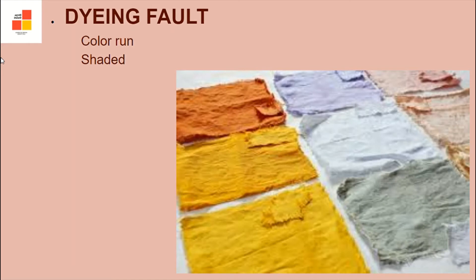Next is dyeing fault. The first is color run, where the color on an area bleeds and is imposed on another area. Shaded means the color is not uniform from one location to another.